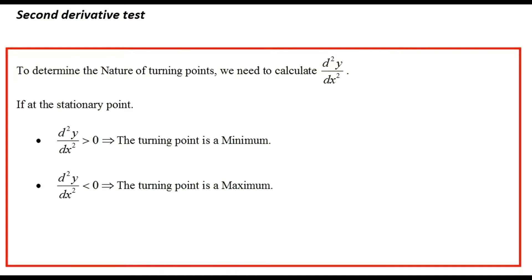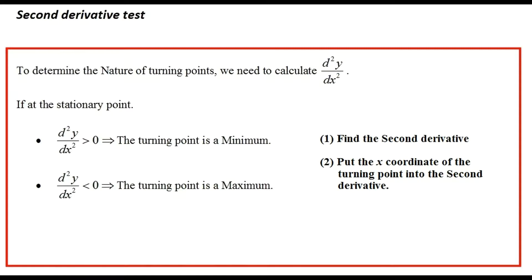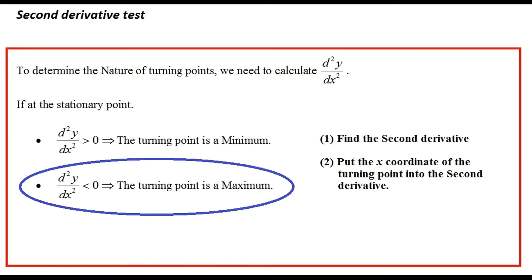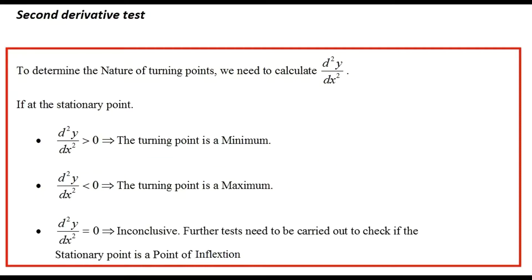The second option: if the value of d²y/dx² at the stationary point is less than zero, you have a maximum turning point. In other words, calculate d²y/dx², put the x-coordinate of your stationary point in, and if the result is less than zero, you have a maximum turning point.